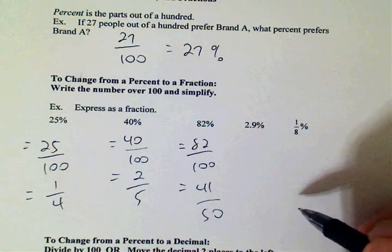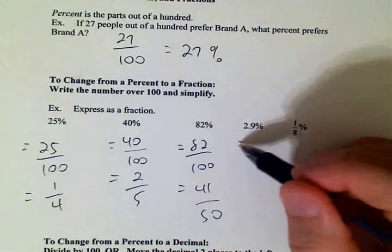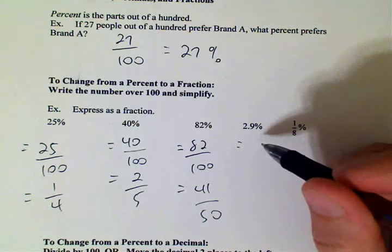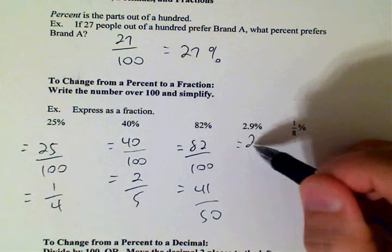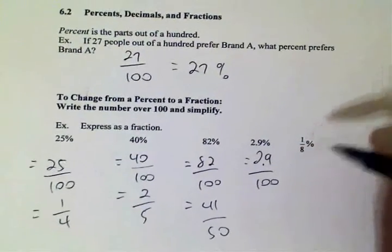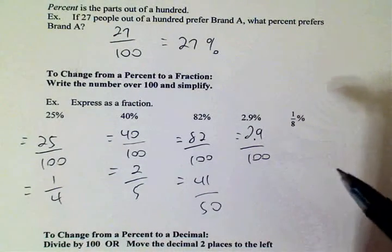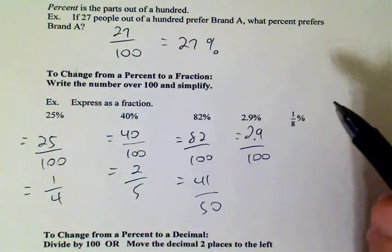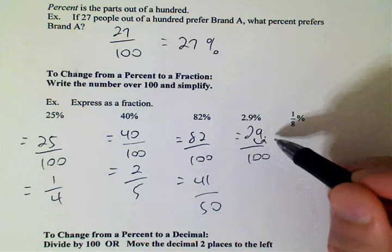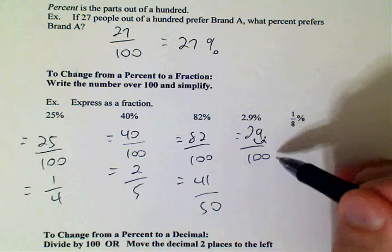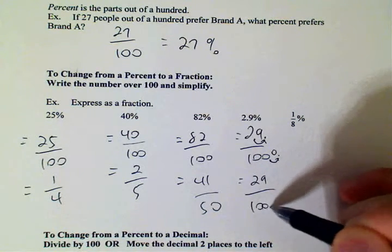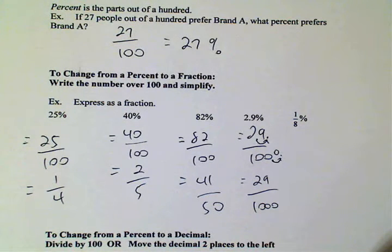Two point nine percent. Let's just do it the long way — two point nine per one hundred. We don't want decimals in our fraction, so I'm going to take that decimal and move it to the right to make it a whole number. But if I move the decimal to the right one place in the numerator, I've got to do the same thing in the denominator. That makes it twenty-nine over a thousand. That's what two point nine percent actually is — twenty-nine over a thousand.